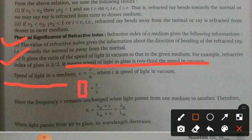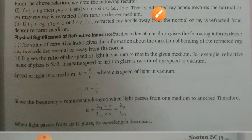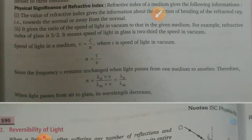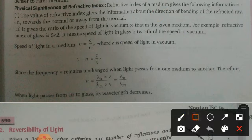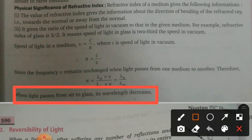We can find the relation: n = c/v, so v = c/n. Since the frequency ν remains unchanged when light passes from one medium to another, we can write n = λ_a × ν / (λ_m × ν) = λ_a / λ_m. This means when light passes from air to glass, its wavelength decreases.